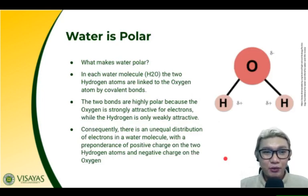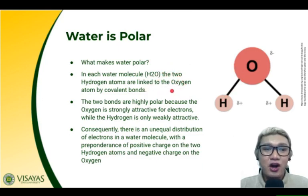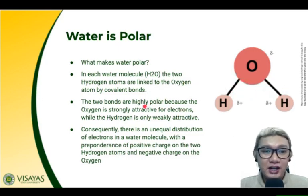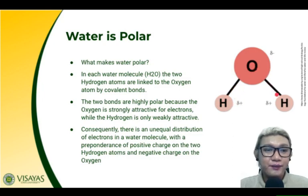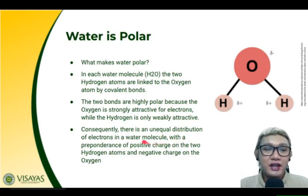First, water is polar. What makes water polar? In each water molecule, H₂O, the two hydrogen atoms are linked to the oxygen atom by covalent bonds. The two bonds are highly polar because the oxygen is strongly attractive for electrons, while the hydrogen is only weakly attractive. Consequently, there is an unequal distribution of electrons in a water molecule, so it is called a polar molecule.